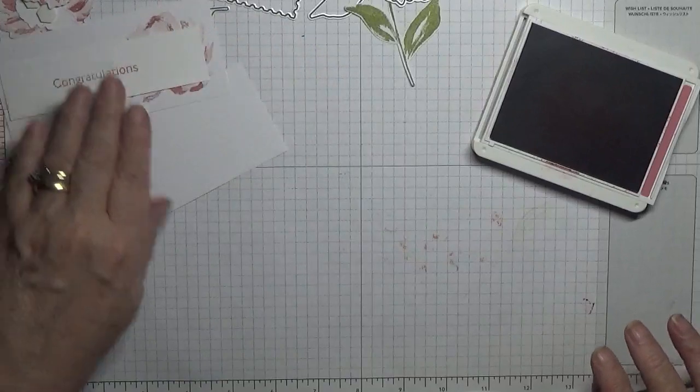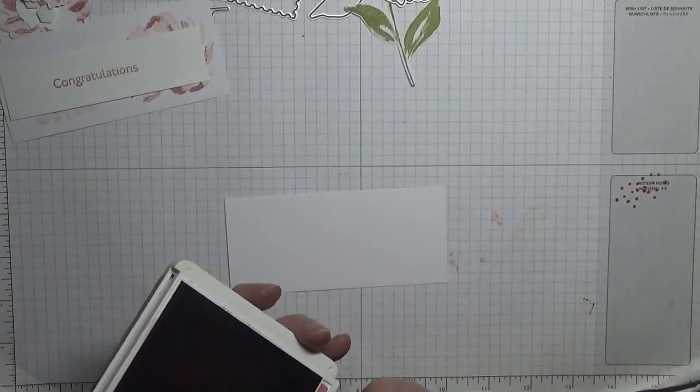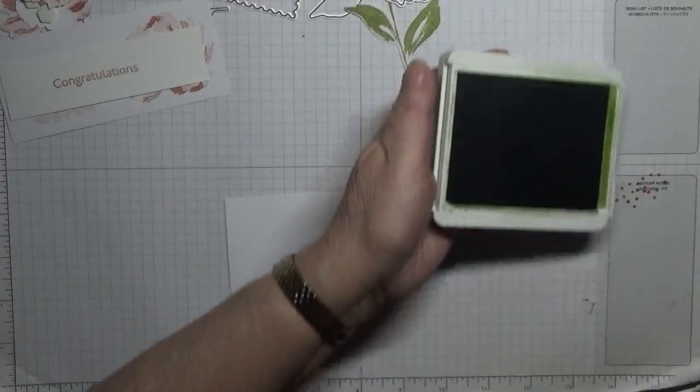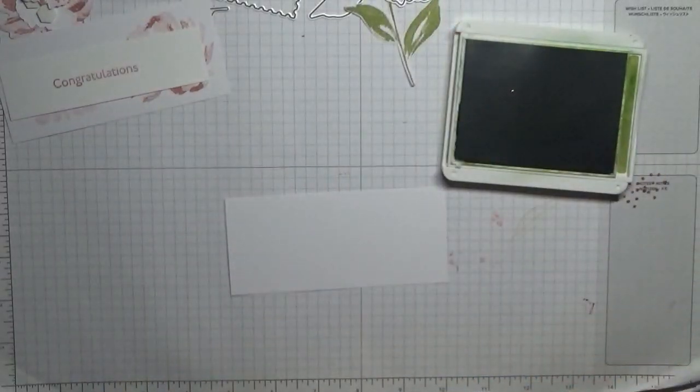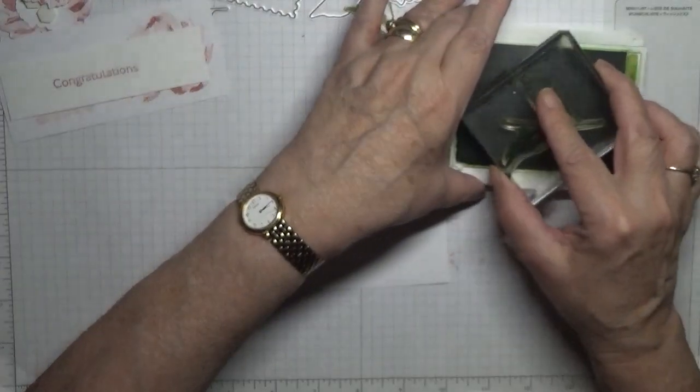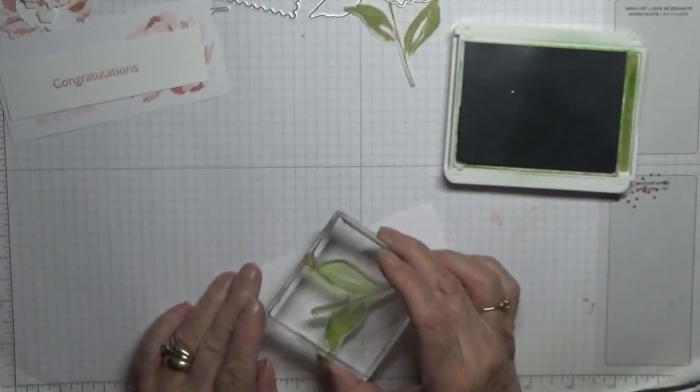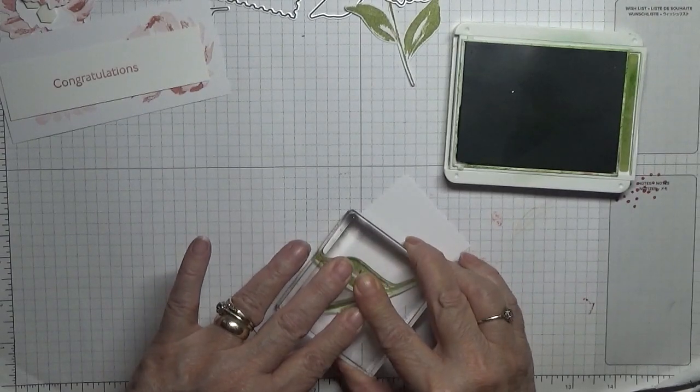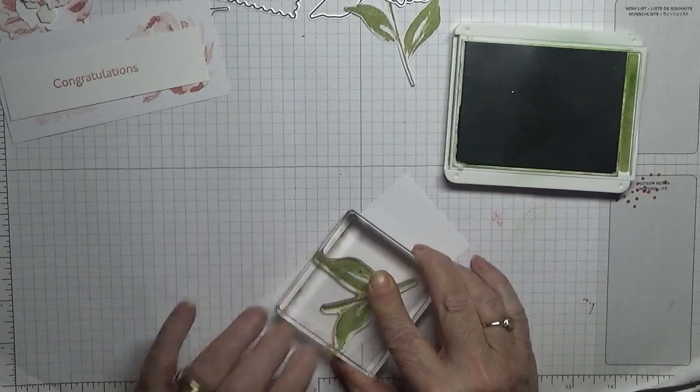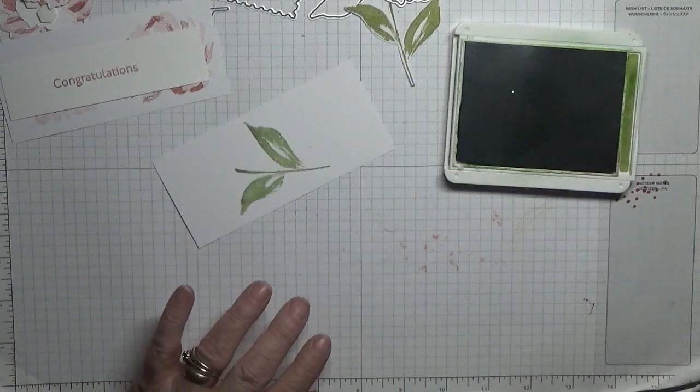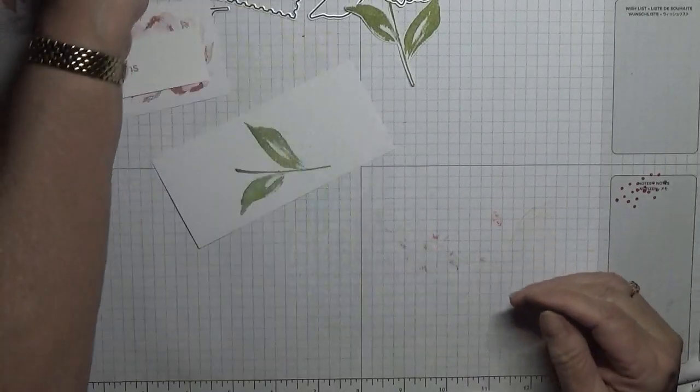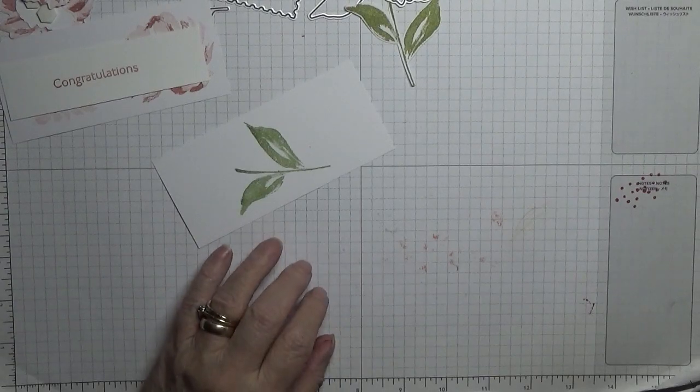They need cutting out and now we need a leaf. So with Old Olive and our leaf die, we will pop that on there. Right, let's cut all these out.